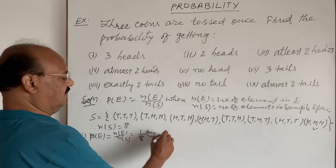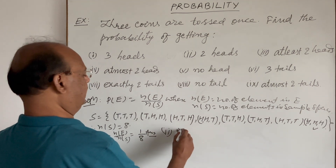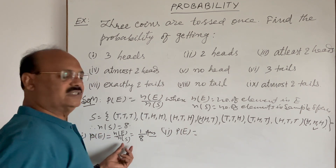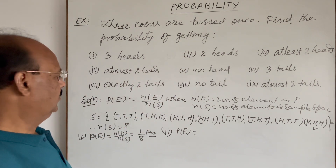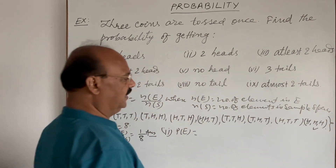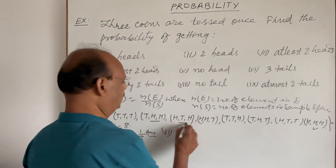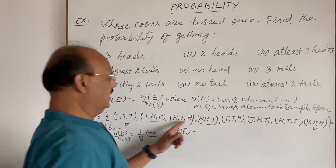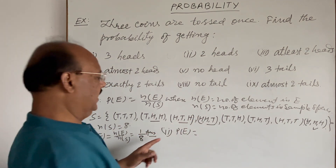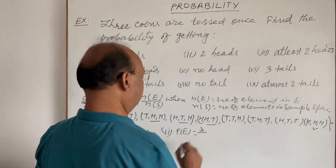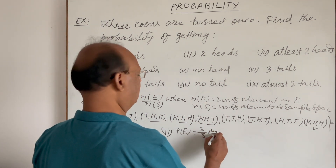For the second part, two heads: using the same formula n(E) / n(S), we look for elements with exactly two heads. There are three such elements — T H H, H T H, H H T — so n(E) is 3 and n(S) is 8. The answer for the second part is 3/8.